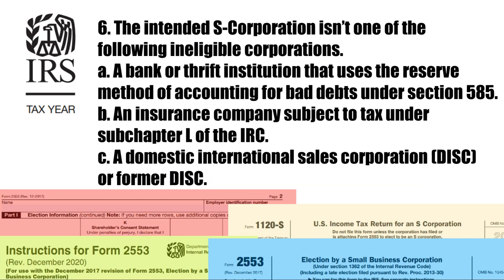Number 6. The intended S-Corporation isn't one of the following ineligible corporations: (a) a bank or thrift institution that uses the reserve method of accounting for bad debts under Section 585; (b) an insurance company subject to tax under Sub-Chapter L of the Internal Revenue Code; (c) a domestic international sales corporation (DISC) or former DISC.